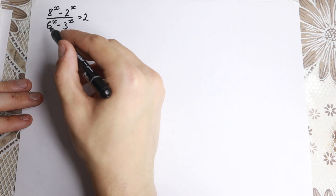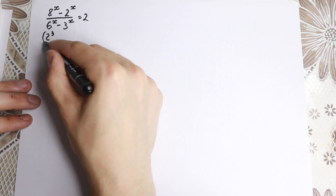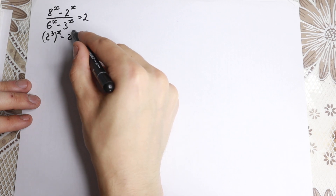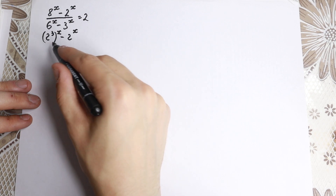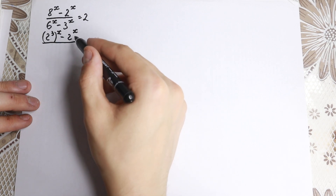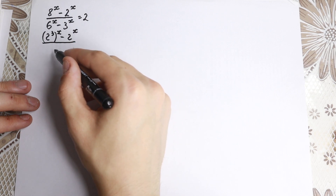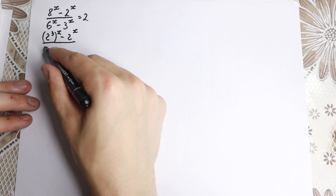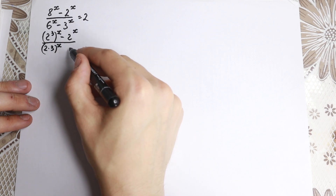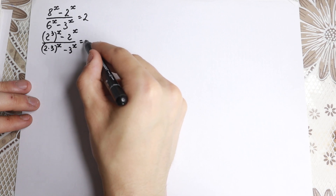We have 8. Now 8 is a really good number because we can write it as 2 cubed, all to the power x, minus 2 to the x. And for the denominator, 6 can be written as 2 times 3 — so we have 2 times 3 to the power x, minus 3 to the x, equal to 2.